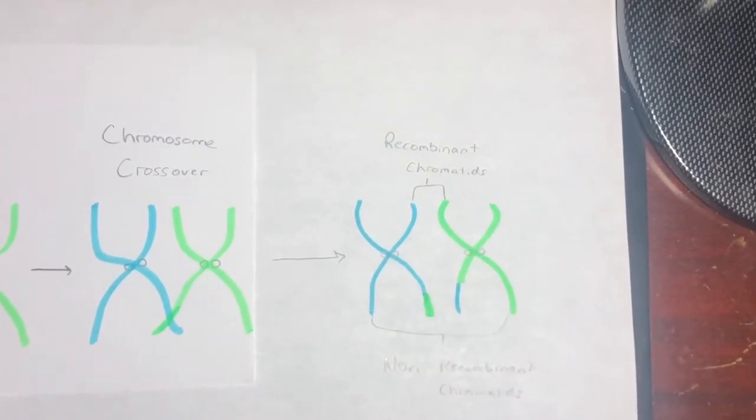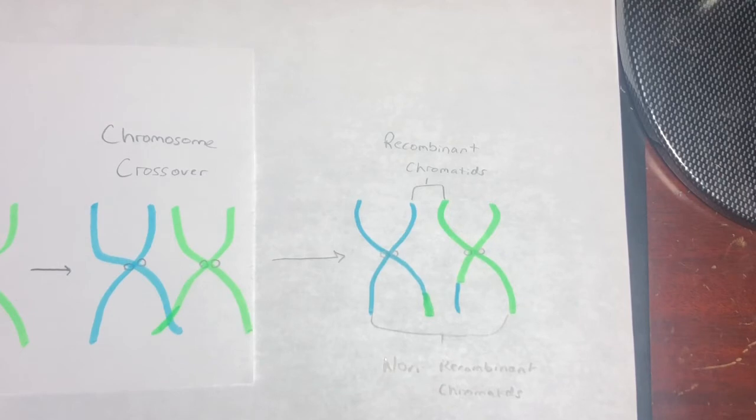When a meiotic prophase ends, each bivalent will remain held together by at least one chiasma, with the plural of this word being chiasmata. Each chiasma corresponds to a crossover between two non-sister chromatids.